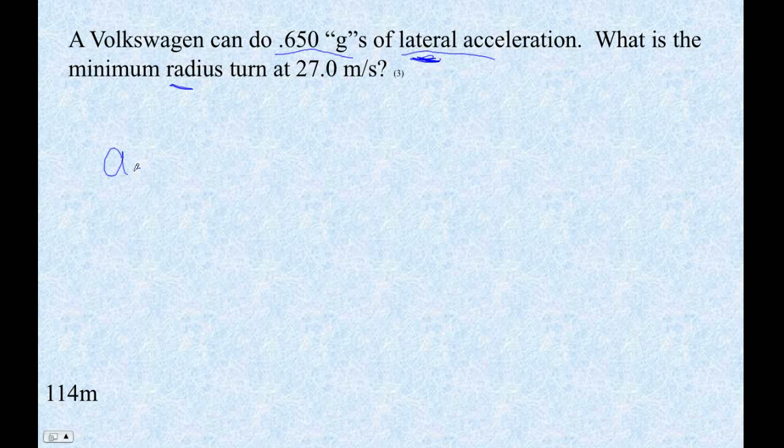The first thing to do is find the acceleration, which is going to be 0.650 of a G. So 0.65 times 9.8 is 6.37, and that's meters per second squared.